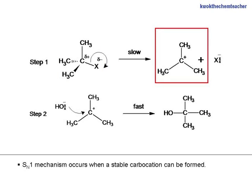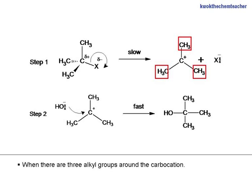SN1 mechanism occurs when a stable carbocation can be formed. When there are three alkyl groups around the carbocation, the alkyl groups donate electron density to stabilize the carbocation.